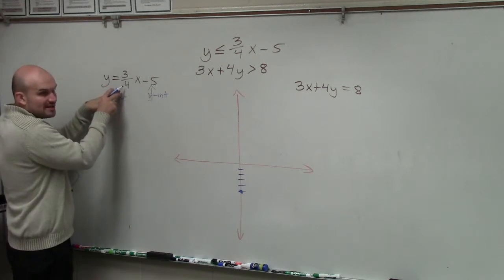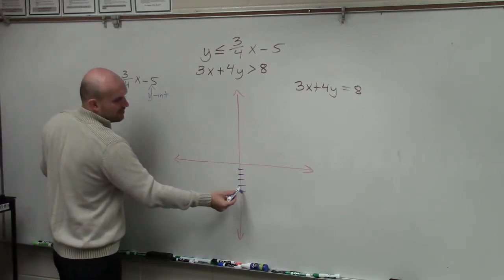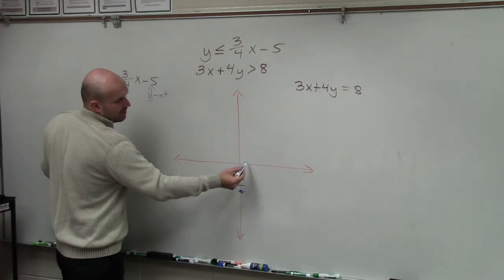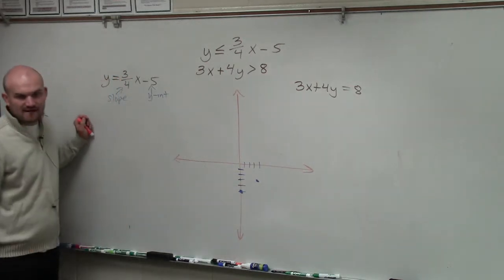3 fourths is my slope, which is going to tell me from my y-intercept to go up 3, 1, 2, 3, over 4. 1, 2, 3, 4. So up 3, over 4. Does everybody see that?